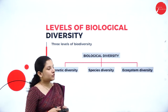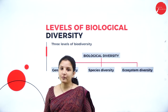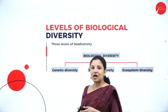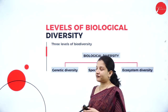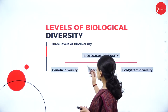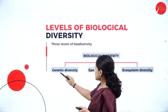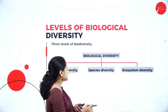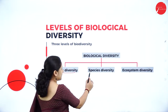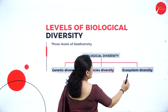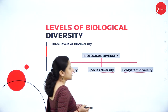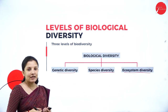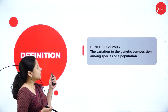Next, talking about the levels of biodiversity. We can study biodiversity under three different levels: genetic diversity, species diversity, and ecosystem diversity. Let us study each of these one by one.